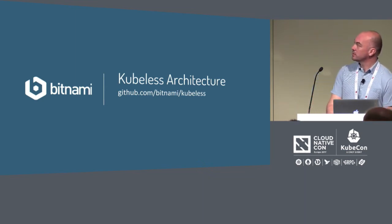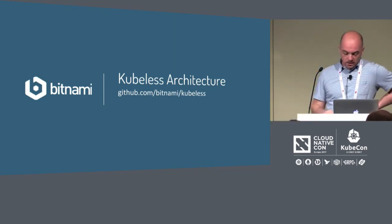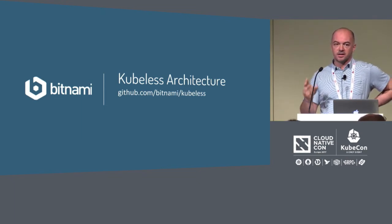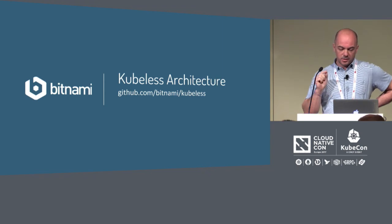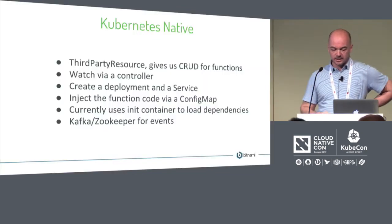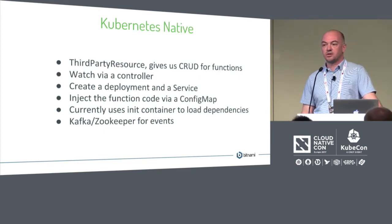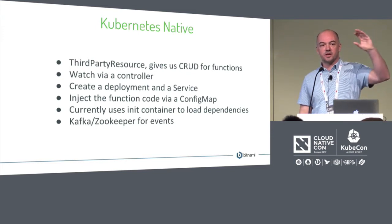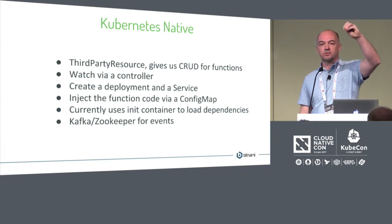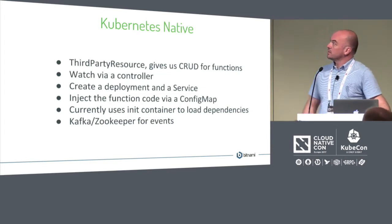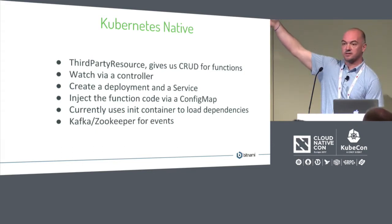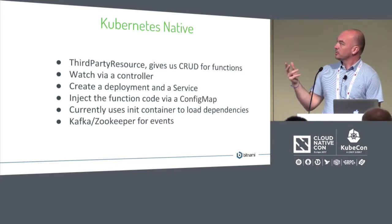Let's talk about the Kubeless architecture. It's on GitHub — definitely still rough but usable, we use it every day. Kubeless is Kubernetes native. We have third-party resources to extend Kubernetes — it's a great mechanism. We just create a third-party resource that defines a function. Now we have a Kubernetes endpoint called 'functions' and we can start creating functions at that custom endpoint. Kubeless uses third-party resources to give us a REST endpoint for functions. But the third-party resource itself doesn't give you anything — you need to write a controller.